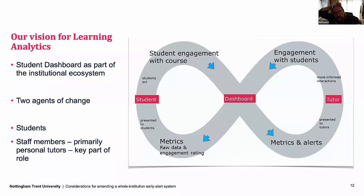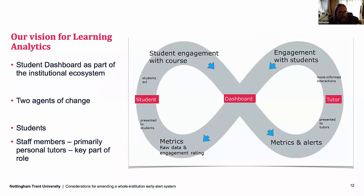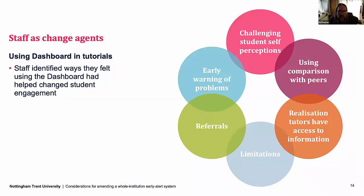We see there being two users in the system: students themselves, who can see all of the data we have on them in their own dashboard — they can't see information about their peers apart from an average line of the students on their course — and staff members, particularly personal tutors, who can see both the metrics and the data we have about students, but also alerts, which is the focus of this paper.